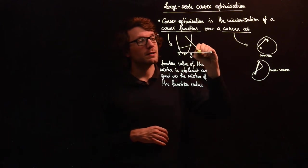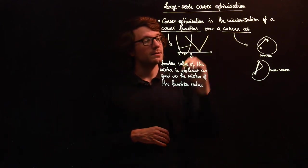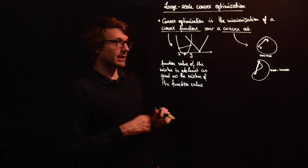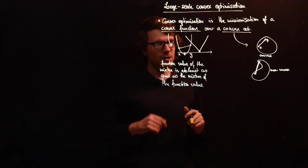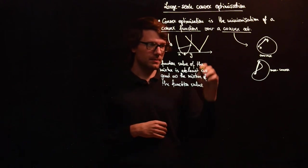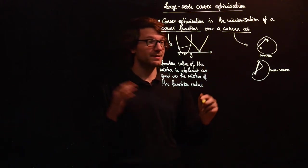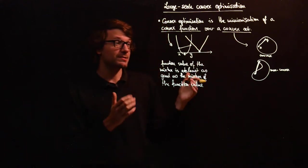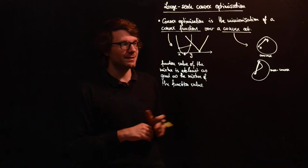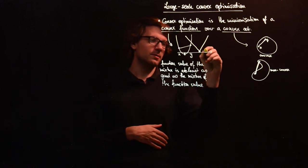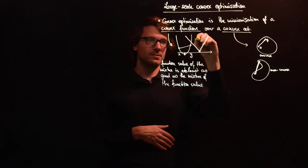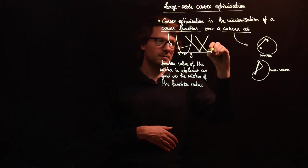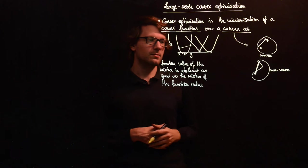Another example would be a function like this. It does not need to be differentiable, which will actually be a large part of this course, how to deal with that, because that happens quite often in practice where you can't just take the gradient and set it to zero. So this is convex, and you can also have a mixture like here, something linear and then something. This is also convex.